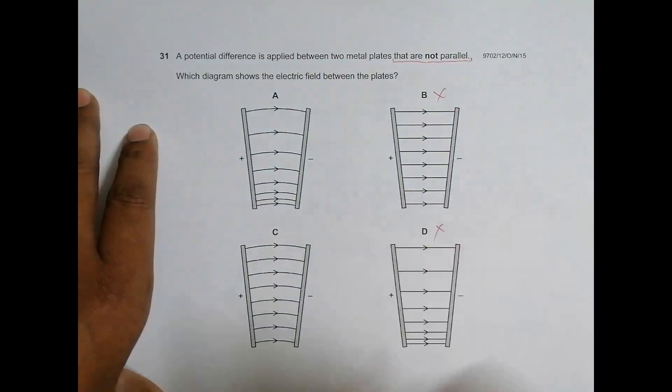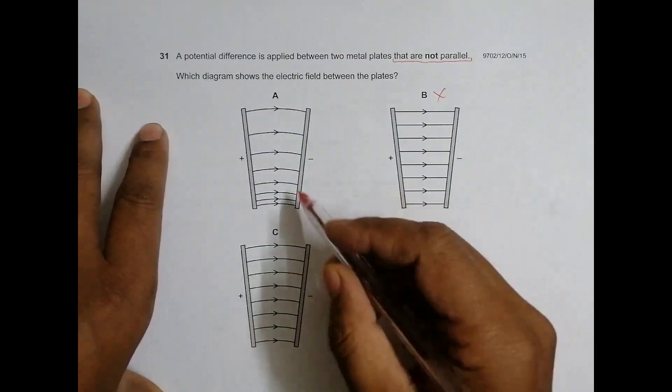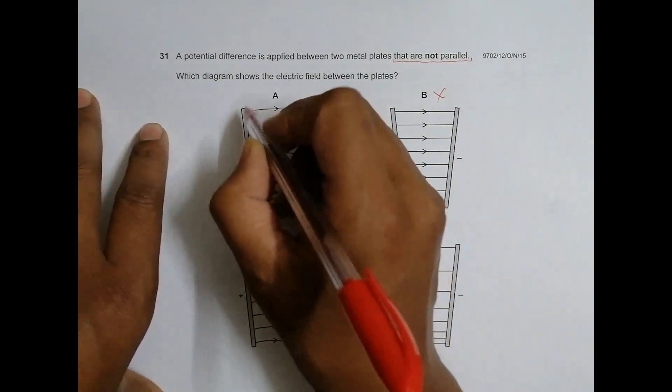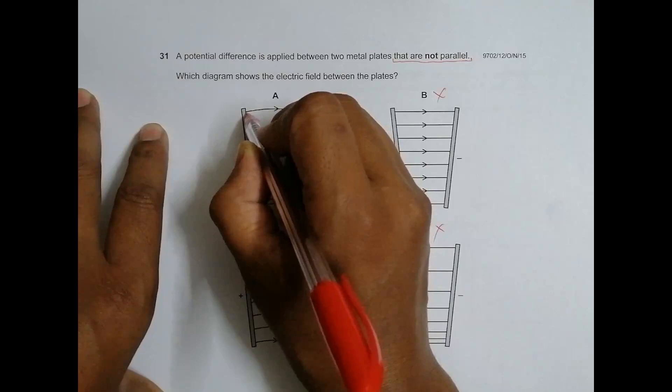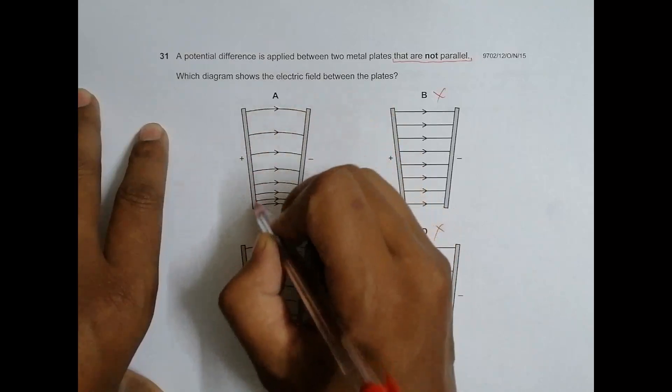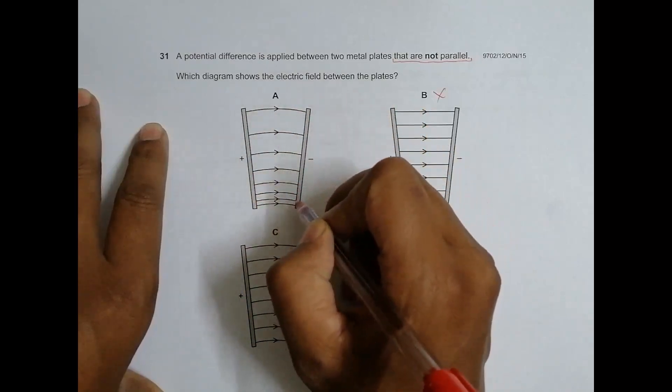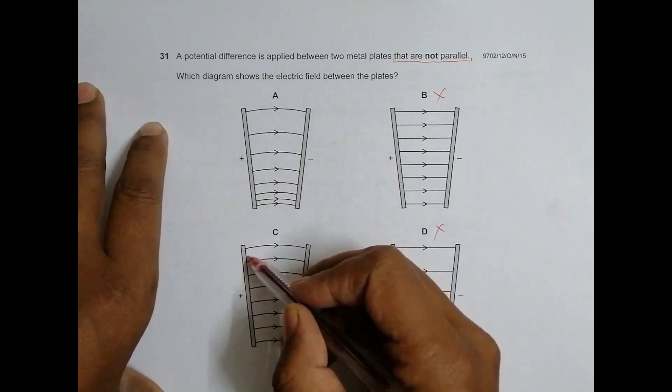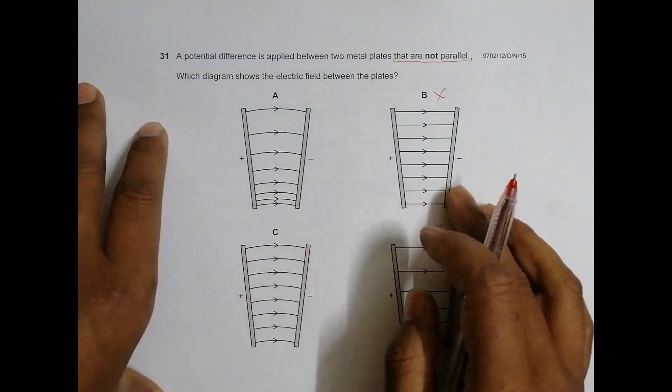Regarding choice A, the lines of force are emitting from the plus, normally all normal here and all normal here, seems to be okay. In C also normal and normal, okay.